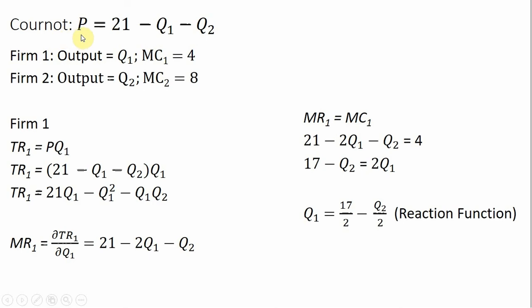Here is the inverse market demand, where Q₁ is the output of Firm 1 and Q₂ is the output of Firm 2. We have different cost structures between the firms. The marginal cost for Firm 1 is constant at $4. The marginal cost for Firm 2 is constant at $8.